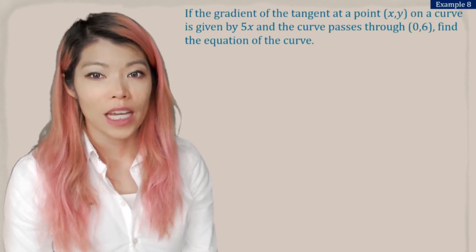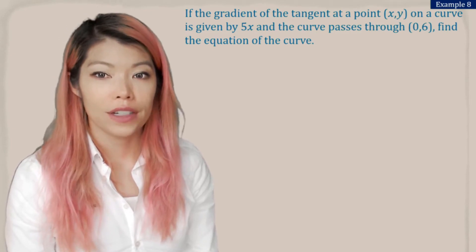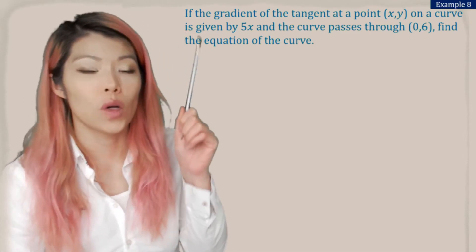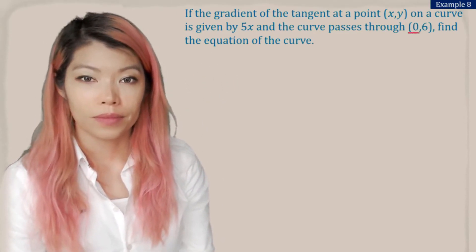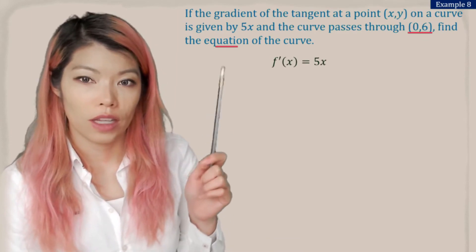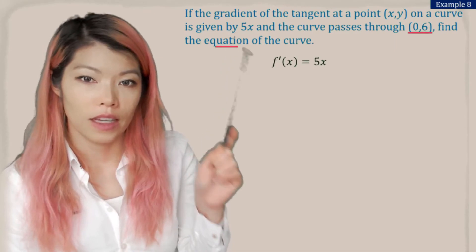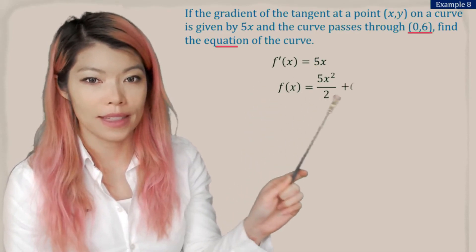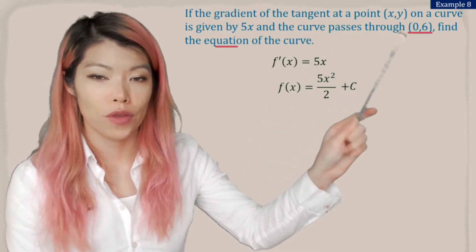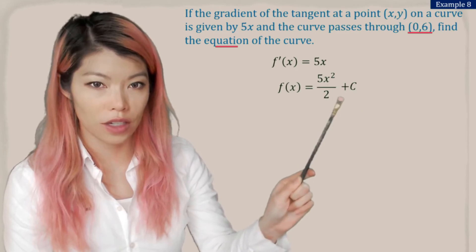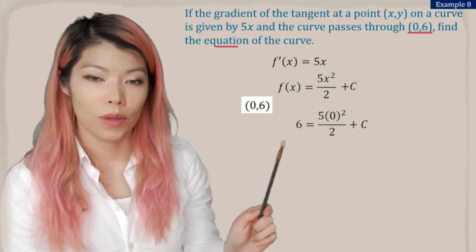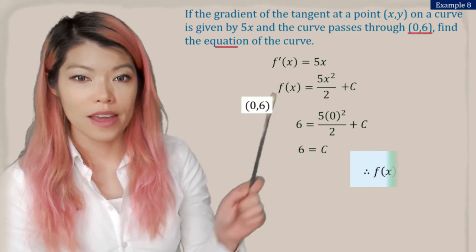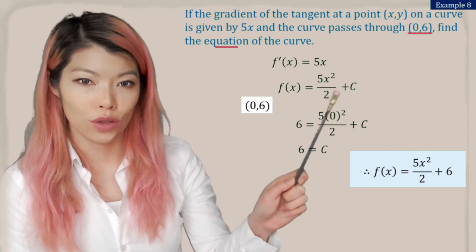Example 8: if the gradient of the tangent at a point (x, y) on a curve is given by 5x and the curve passes through (0, 6), find the equation of the curve. We're given the gradient and looking for the equation, so we anti-derive again. The gradient is 5x: add 1 to the power and divide by that new power — don't forget y plus c. The curve passes through (0, 6), so x is 0 and y is 6. Plugging that in, that term becomes 0, so c is equal to 6. Therefore the equation is y equals 5x squared over 2 plus 6.